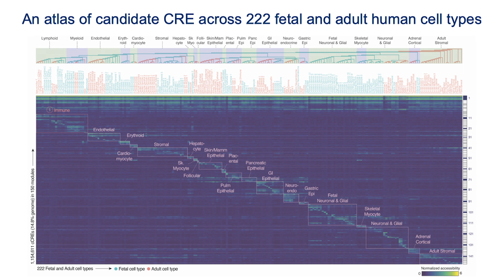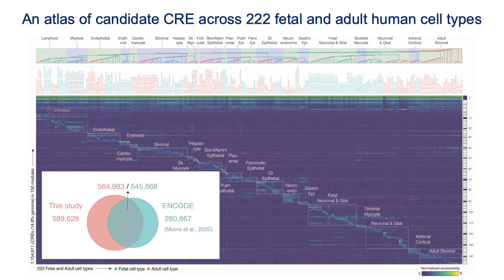To characterize the cell type specificity of cis-regulatory elements across fetal and adult cell types, we organized 1.2 million elements into 150 clusters based on their normalized accessibility scores across the 222 cell types. Some clusters displayed shared accessibility patterns across all cell types, while others were limited to single fetal or adult cell types, or to groups reflecting shared cellular lineages. We applied gene ontology and motif enrichment analysis to each cluster to reveal biological functions and transcription factor motifs associated with these cis-regulatory element clusters. Compared with the registry of candidate cis-regulatory elements published by the ENCODE consortium, we covered 70% of its elements and also included 589,000 previously unannotated elements.